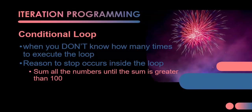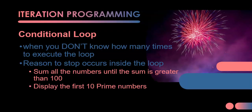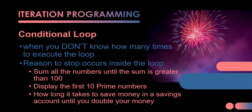For example, if you want to sum all the numbers until the sum is greater than 100, we don't know how many numbers to add, but when the sum exceeds 100, that triggers the loop to stop. Or if you want to display the first 10 prime numbers, you count how many prime numbers you've found, and stop when you've found 10. Or with a savings account — save until you double your money. In those cases we don't know how many times the loop will repeat, so we use a conditional loop.